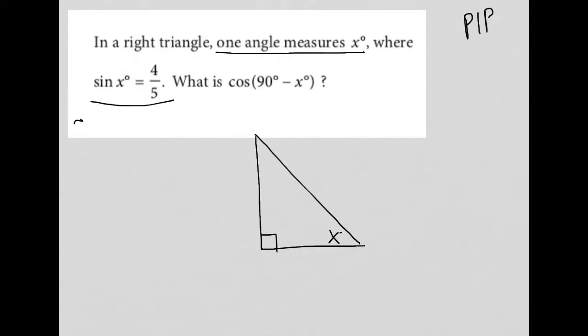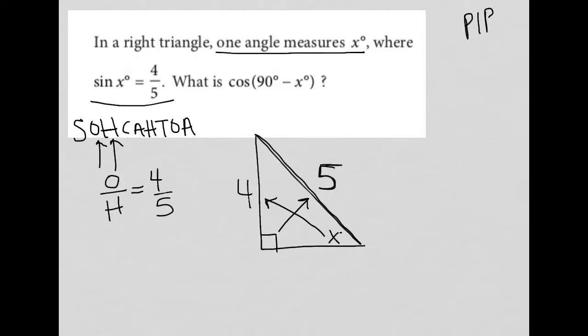So hopefully you remember that SOHCAHTOA tells us the ratios of each of our trig functions. Sine of an angle is equal to the opposite over the hypotenuse, or O over H. So we were told that we have 4 over 5. So the opposite side of x degrees should be 4, and the hypotenuse, which is always opposite of the 90-degree angle or the longest side, the hypotenuse must be 5. So that's labeling with everything that we know.